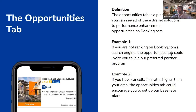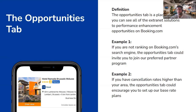The Opportunities tab is a place where you can see all of the extranet solutions for performance enhancement on Booking.com. The first tab of the extranet will be your Opportunity Center, which is really great at looking at pain points and developing actual solutions. To give you some examples of what that looks like — for example one, if you're not ranking on Booking.com's search engine, the Opportunities tab could invite you to join our Preferred Partner Program.